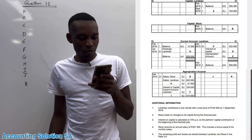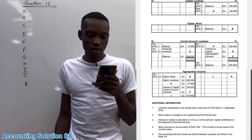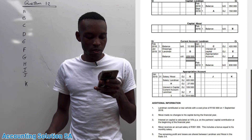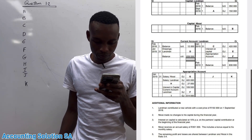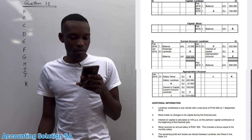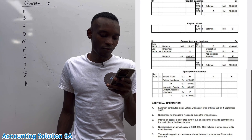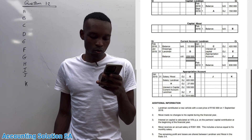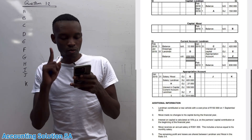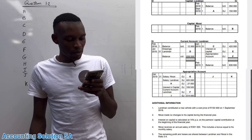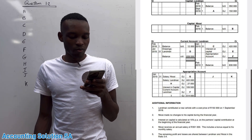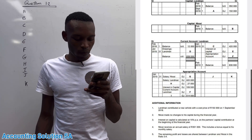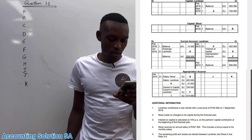The transactions: Landman contributed a new vehicle to the financial year valued at 150,000 on 1 September 2018. Nkosi made no change to his capital during the financial year. Interest is calculated at 15% per annum on the partners' capital contribution at the beginning of the financial year. Nkosi received an annual salary of 351,000, which includes a bonus equal to his one month's salary. The remaining profit and loss are shared between Landman and Nkosi in the ratio of 3:4.